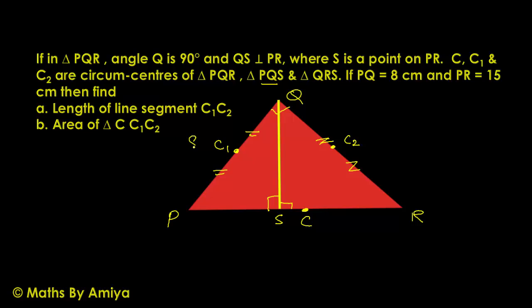Now PQ is 8 cm, this complete length is 8 cm. PR is 15 cm. We need to find the length of line segment C1C2. We know C1 and C2 are midpoints. We join the midpoints which becomes half of the hypotenuse or half of the base. Since the base is 15 cm, the length of C1C2 is 15 by 2 cm, that is 7.5 cm. I hope this one is clear.